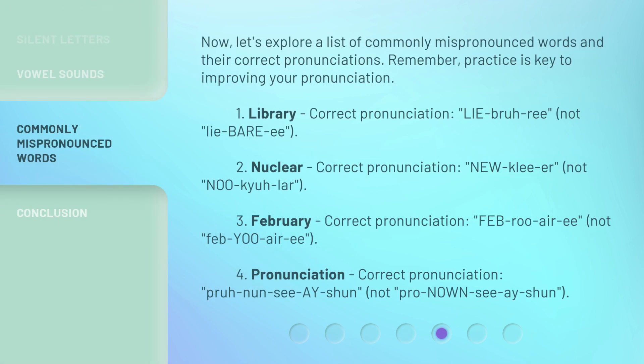Now let's explore a list of commonly mispronounced words and their correct pronunciations. Remember, practice is key to improving your pronunciation. 1. Library — correct pronunciation: 'Library,' not 'libere-ee.' 2. Nuclear — correct pronunciation: 'Nucle-er,' not 'no-q-lar.' 3. February — correct pronunciation: 'Feb-ru-er-ee,' not 'feb-u-er-ee.' 4. Pronunciation — correct pronunciation: 'Pronunciation,' not 'prono-none-ci-i-tion.'